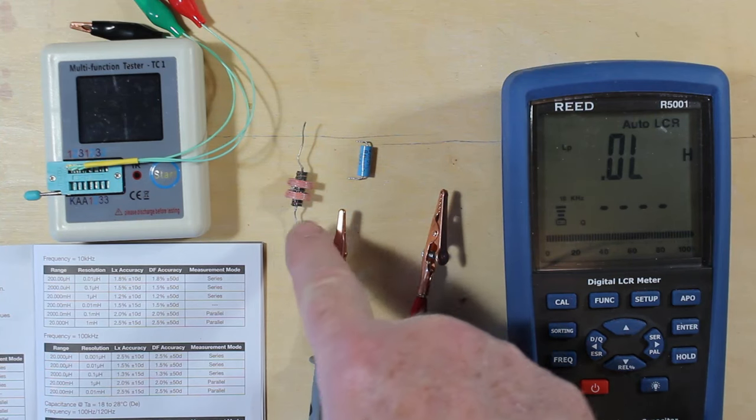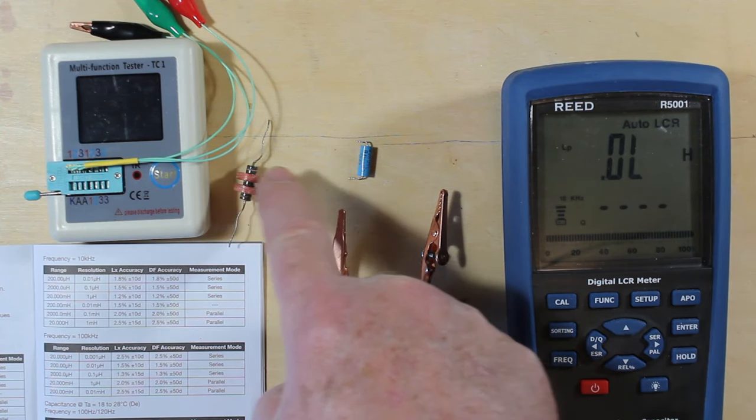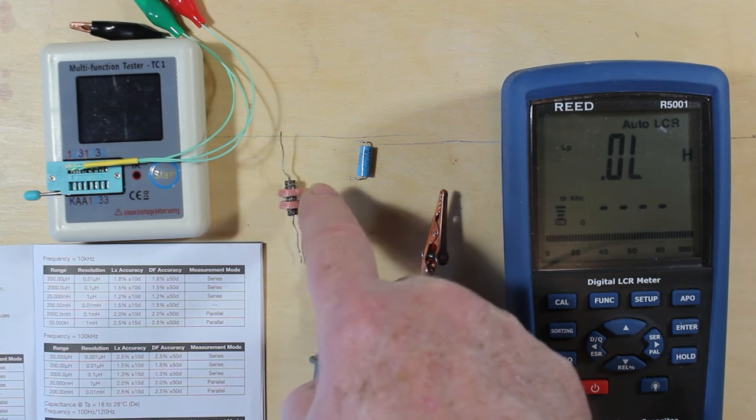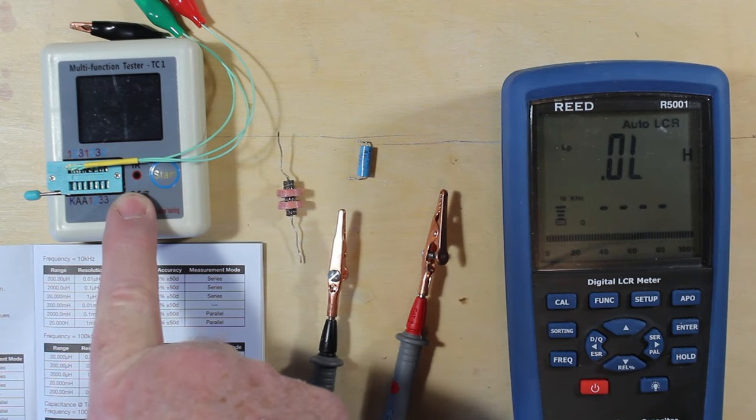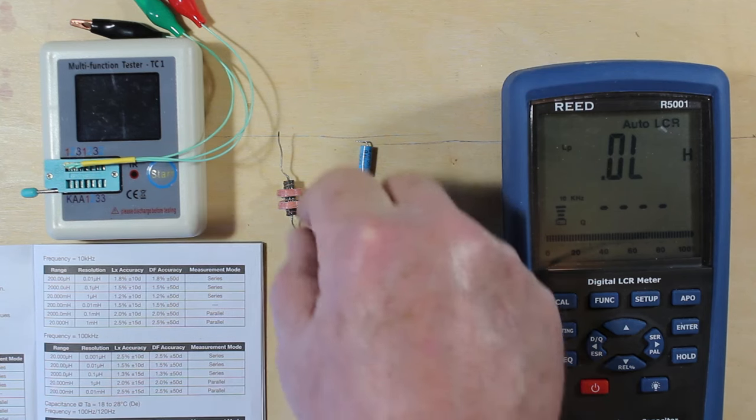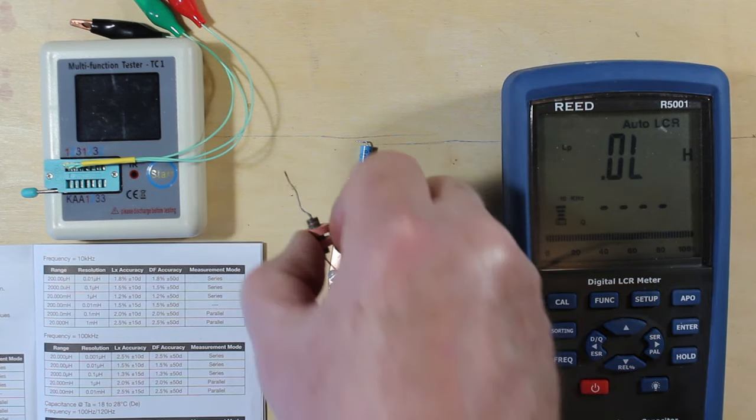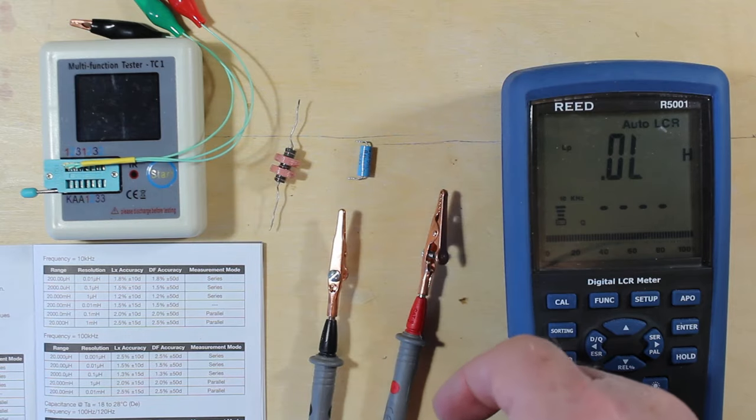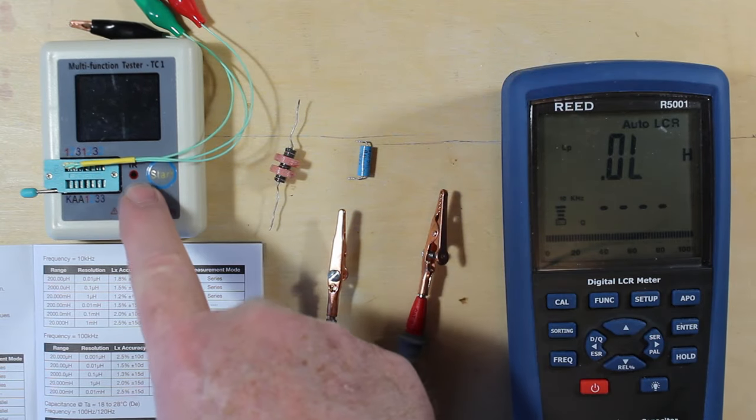In a previous video, I tried to find out what the inductance of this little coil was by using my multifunction tester. My multifunction tester didn't like it. It just reports it back as approximately a 20 ohm resistor, so not an inductor at all according to this thing.